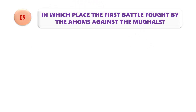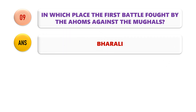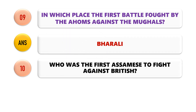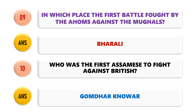Question No. 9: In which place was the first battle fought between the Ahoms and the Mughals? The place was Barali. Question No. 10: Who was the first Assamese to fight against the British? The first Assamese to fight against the British was Gomdar Konwar.